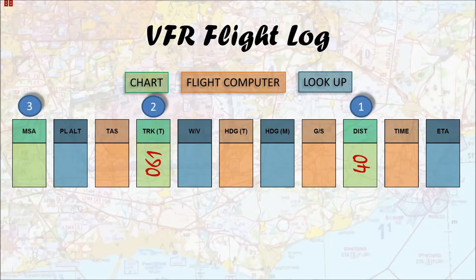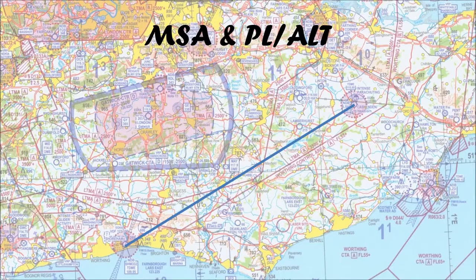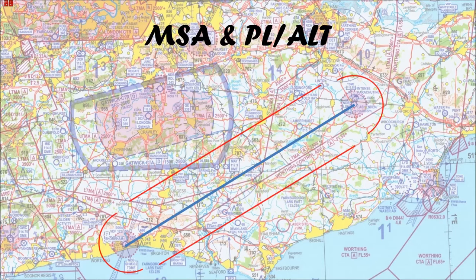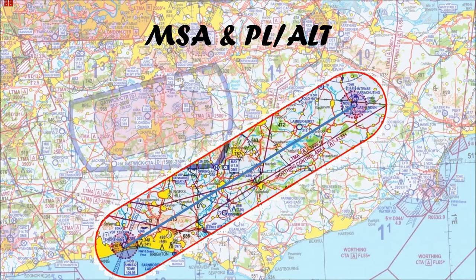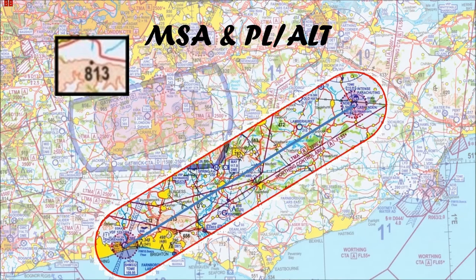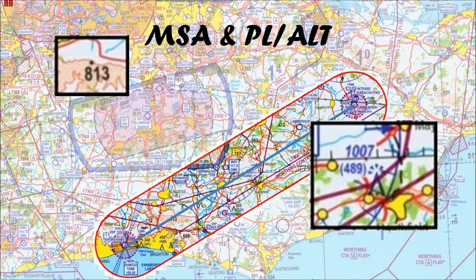Now, while we've still got the chart out, we work out our minimum safe altitude over that leg. To do this we isolate five nautical miles either side of every point we expect to be and look for spot heights or obstructions within that zone. I can see underneath our track there's a geographical spot height of 813 feet above mean sea level. But looking further along our track, there's an obstruction at 1,007 feet above mean sea level — or 489 feet above the ground — so that's clearly the highest of the two.